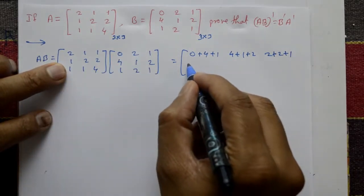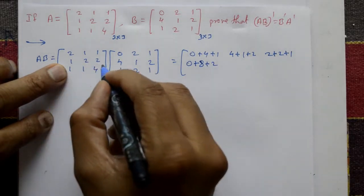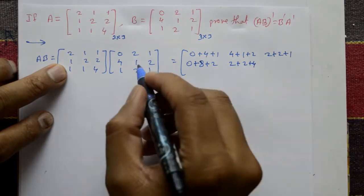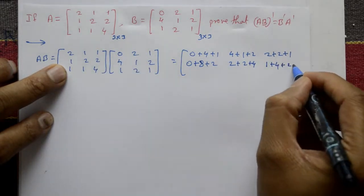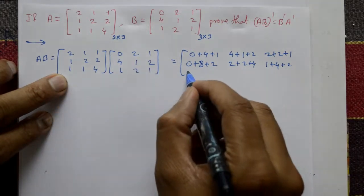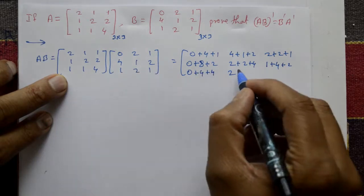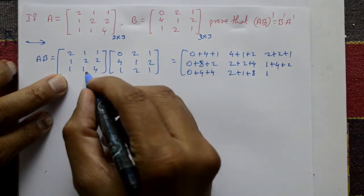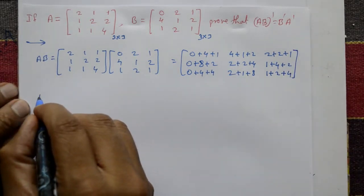Second row, first column: 1×0 = 0, plus 2×4 = 8, plus 2×1 = 2. Second row, second column: 1×2 = 2, plus 2×1 = 2, plus 2×2 = 4. Second row, third column: 1×1 = 1, plus 2×2 = 4, plus 2×1 = 2. Third row, first column: 1×0 = 0, plus 1×4 = 4, plus 4×1 = 4. Third row, second column: 1×2 = 2, plus 1×1 = 1, plus 4×2 = 8. Third row, third column: 1×1 = 1, plus 1×2 = 2, plus 4×1 = 4.